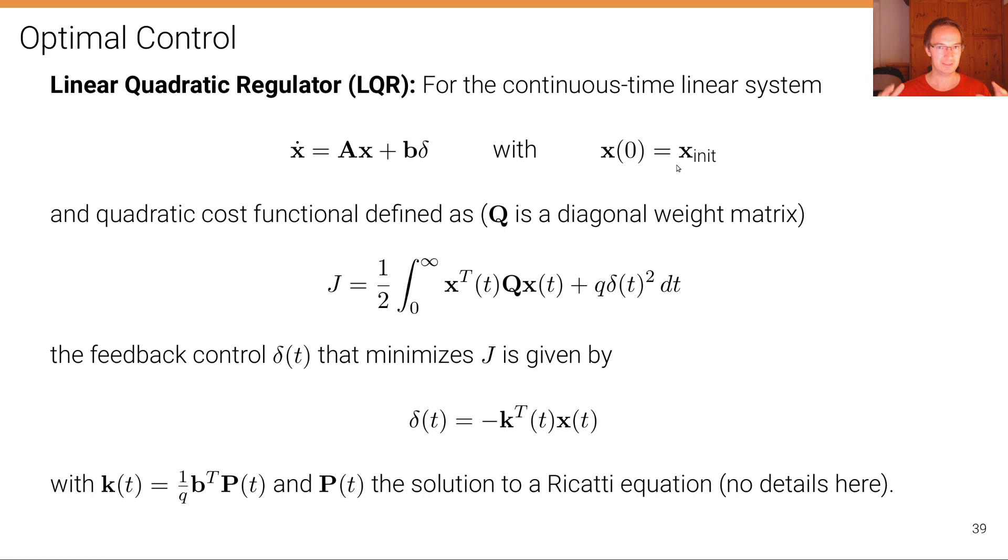The interesting thing is that in this particular simple form, if we can state our system in that specific form, the feedback control delta that minimizes J under these constraints is given by this expression, where K equals this expression.